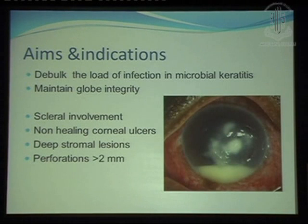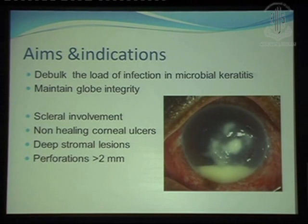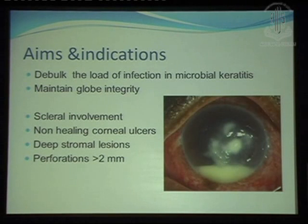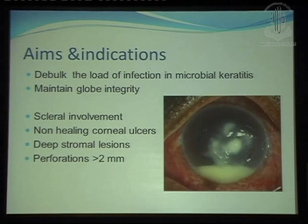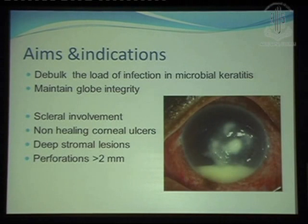Before I go into it, there is one thing I would like to reiterate: this is one surgery which I would always avoid doing. The aim of management of any microbial keratitis, or situations where the cornea is melting, would be to medically manage it as far as possible and try to avoid a therapeutic keratoplasty, because the prognosis could be anything — you just do not know what you will end up with after six months or a year. In unavoidable situations, the aims would be to debulk the load of infection in microbial keratitis and to maintain globe integrity.